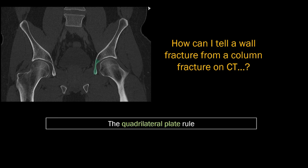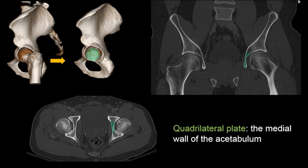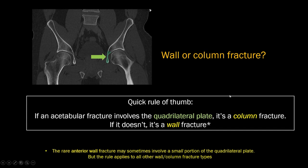On your CT images, how are you going to tell the difference between a wall and a column fracture? The CTs don't come color-coded. We're going to use the quadrilateral plate rule. The quadrilateral plate is the medial wall of the acetabulum — visible on routine axial images and on coronal images. The quick rule of thumb is: if the acetabular fracture extends through the quadrilateral plate, call it a column fracture. If it doesn't, it's just a wall fracture.